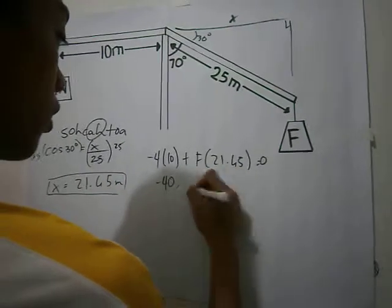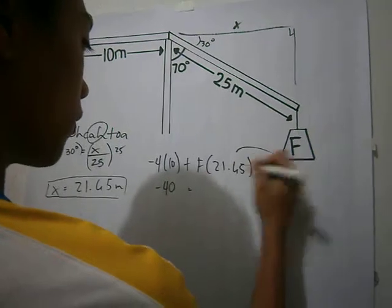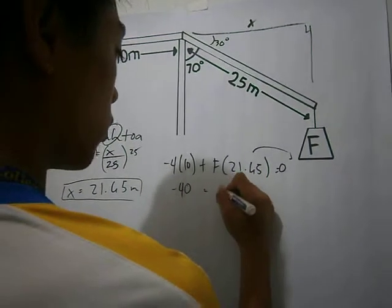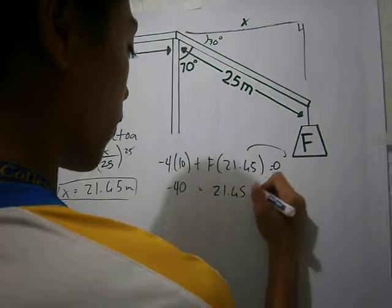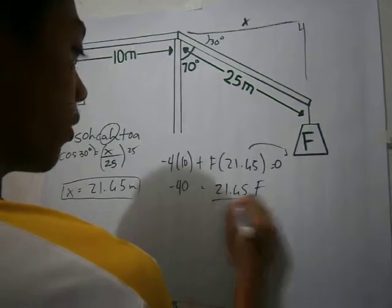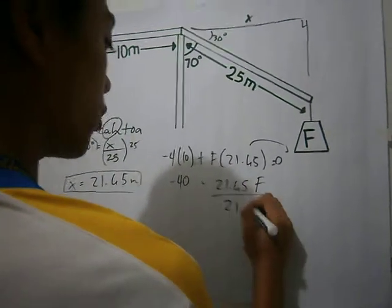Negative 40 equals negative 21.65 F. Divide both sides by 21.65.